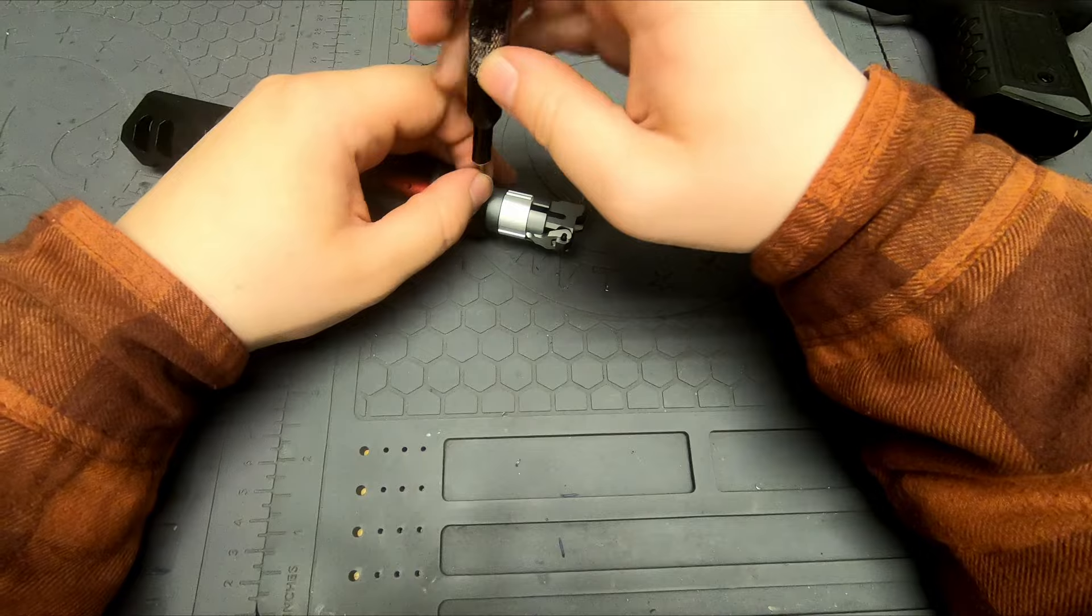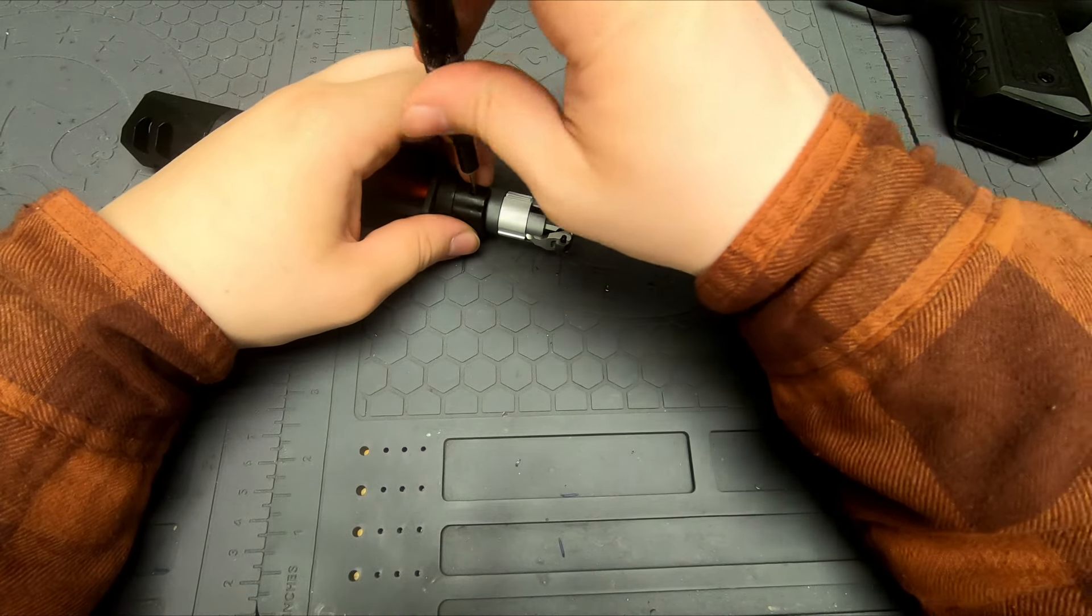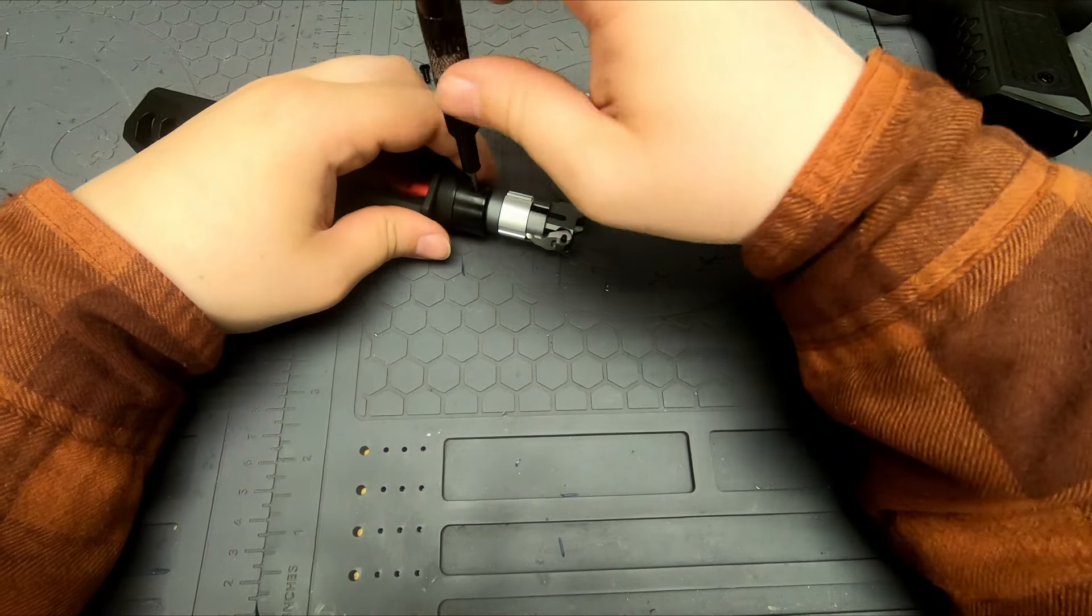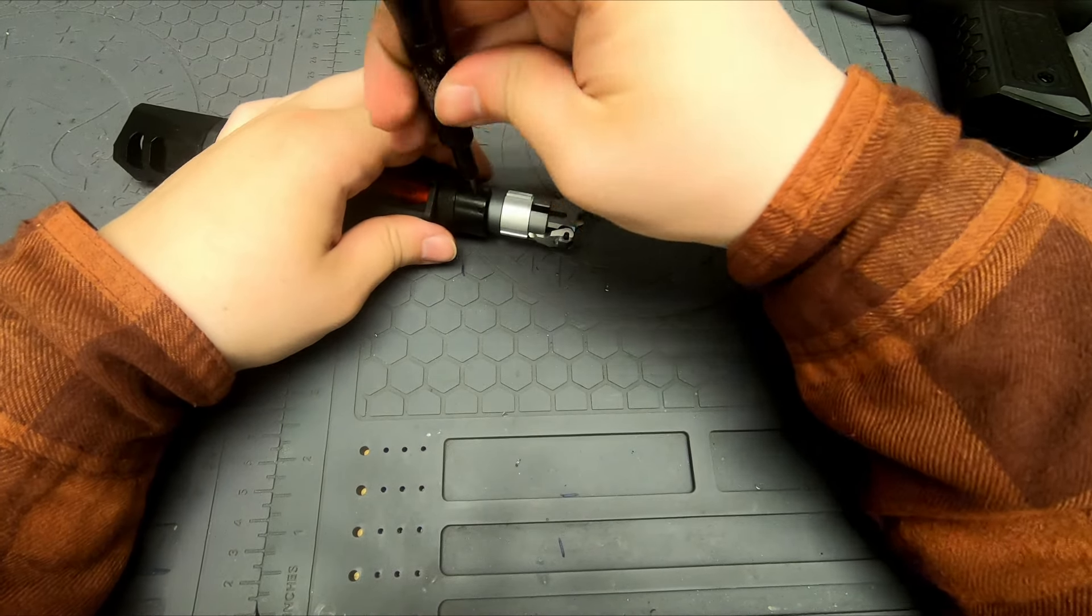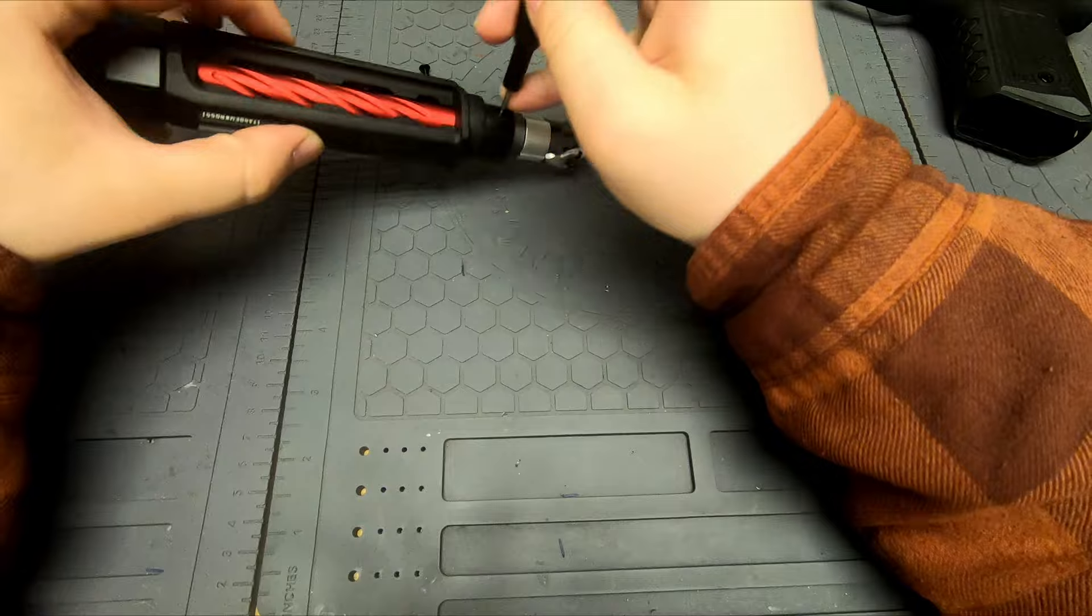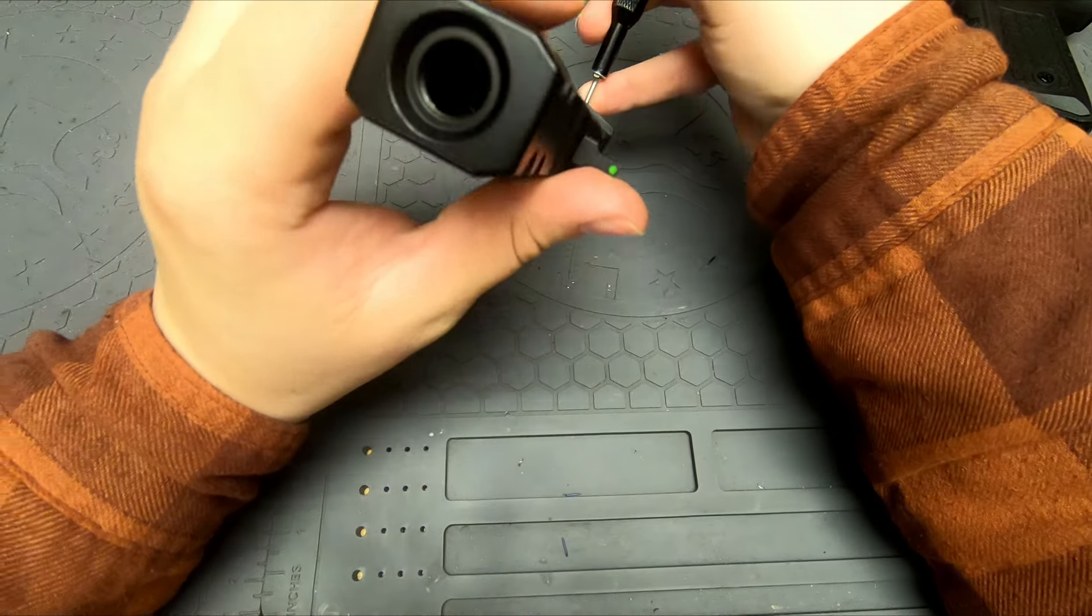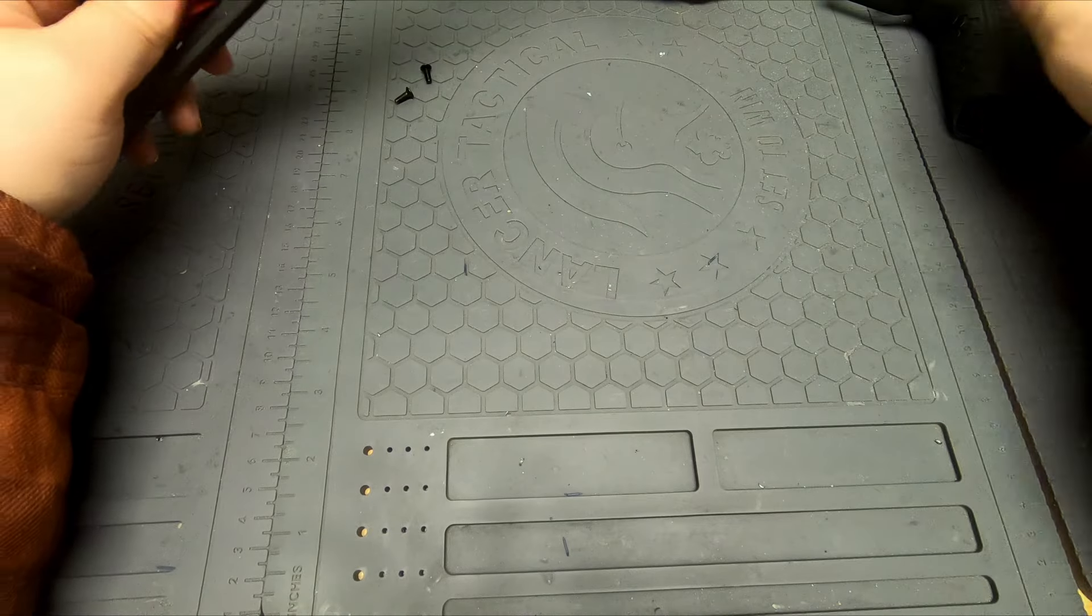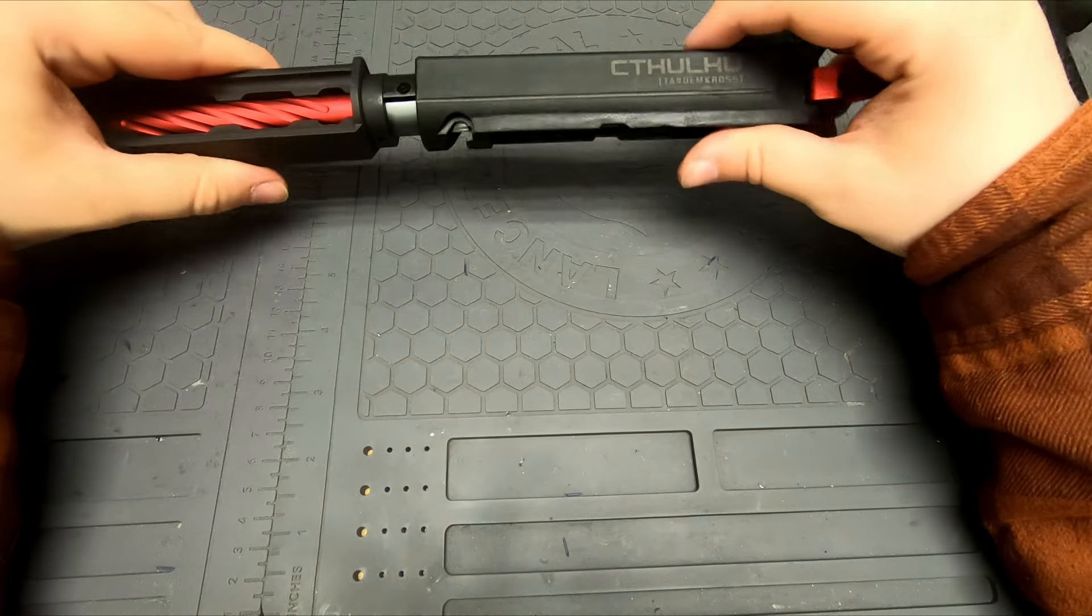And originally I did want to use a 200 millimeter inner barrel, but that is too long. Even with the compensator it would have been sticking out. So I went with 150 millimeters, which is a little bit short, but it does the job just fine. It's long compared to most other guns.